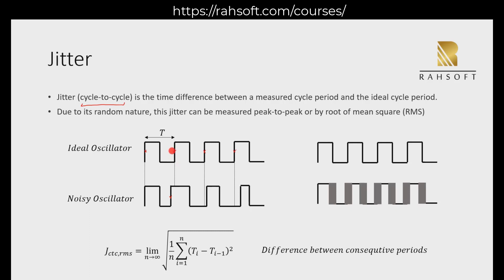For example, this zero crossing is happening here — it's supposed to happen here but it happens earlier. So if you observe these zero crossings, you have jitter. If you're observing this for a long time, you're going to see this picture on the right side. These edges are changing with different speeds, different frequencies — it may go slow, it may go fast. It randomly goes back and forth. So this is jitter: these edges are not going to be fixed; they're always moving back and forth.